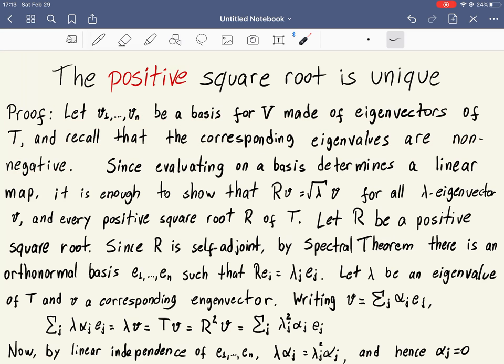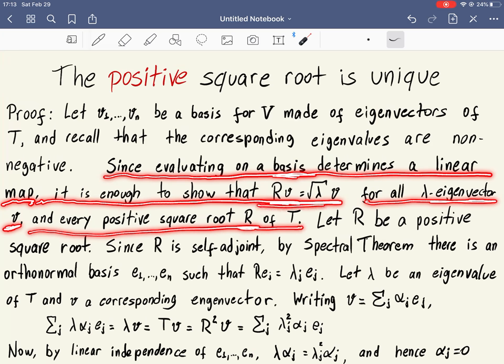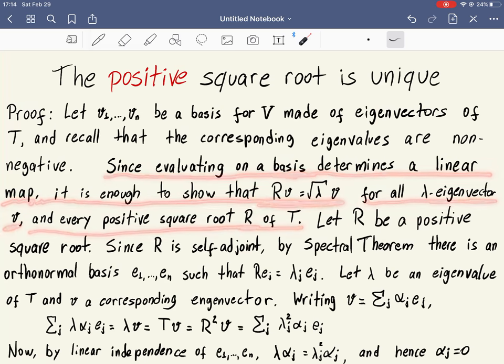And how do we show now uniqueness? Recall from the very beginning, when we started studying linear maps, that when we evaluate a linear map on a basis, the result completely determines what the linear map is. And because of that, it's enough to show that R, this positive square root, has to be equal to square root of lambda times V for every eigenvector V of T. So for every eigenvector V of T, and every positive square root R of T, we have this relationship. So let's prove this.